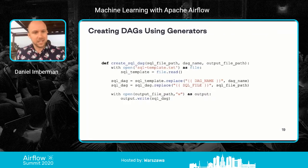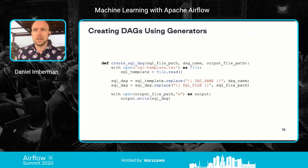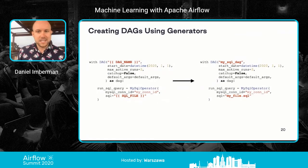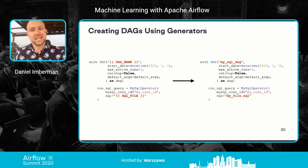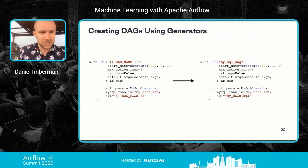There's also the idea of DAG generators. In a simple example, you have a SQL DAG template where you only need to change the DAG name and the SQL file it points to. Now you can create 20 different DAGs running 20 different SQL files on a regular schedule, and the amount of code a data analyst has to write is just calling a single function.